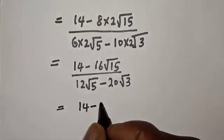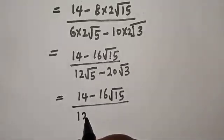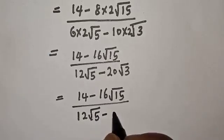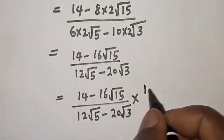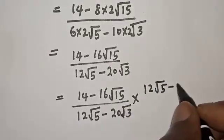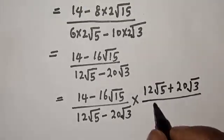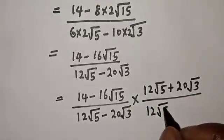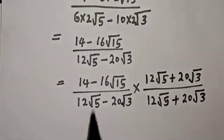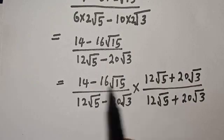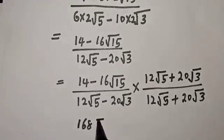So we have 14 minus 16 root 15 over 12 root 5 minus 20 root 3, times 12 root 5 plus 20 root 3 over 12 root 5 plus 20 root 3.